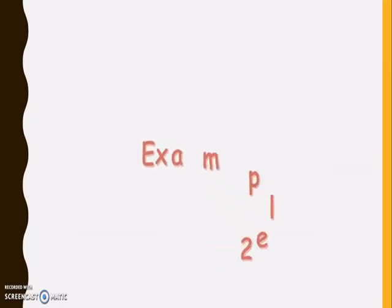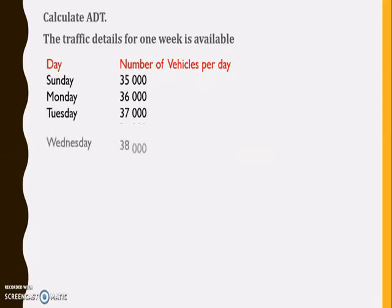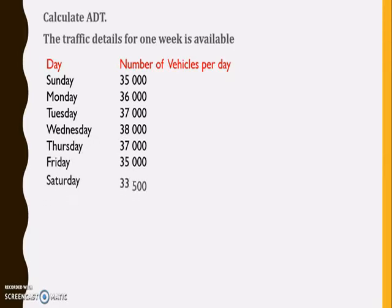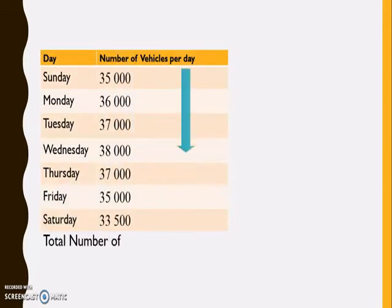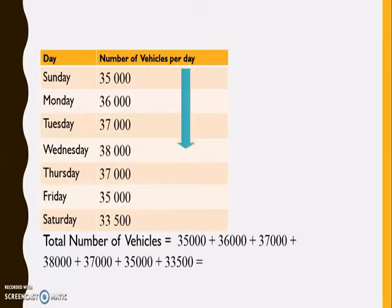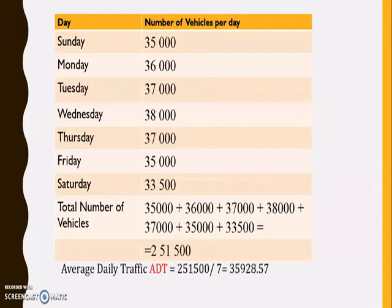Another example: here the traffic details for one week are available from Sunday to Saturday. Based on this data we have to calculate the ADT. To proceed, we have to add all the number of vehicles to find out the total number of vehicles in that particular week travelling through the segment of the road. Then this value divided by the total number of days selected for observation — that is 7 days in this case — will give you the average daily traffic. Here a fraction is coming, so we are rounding off to the nearest integer. The value of ADT is 35,929.